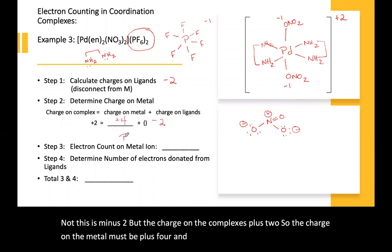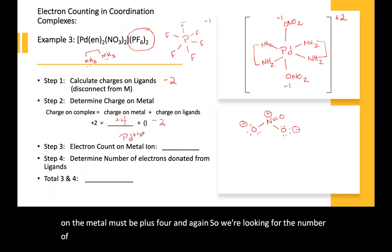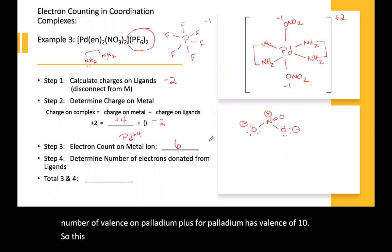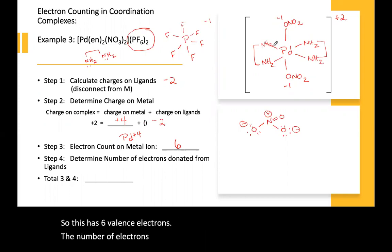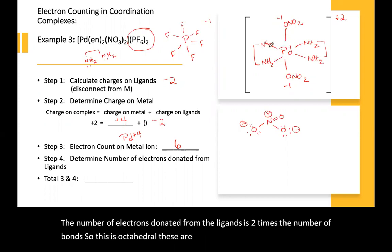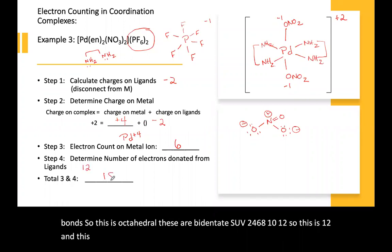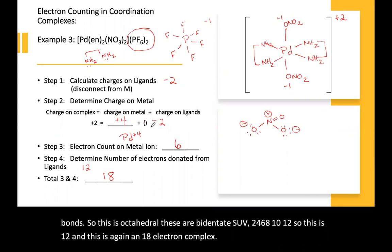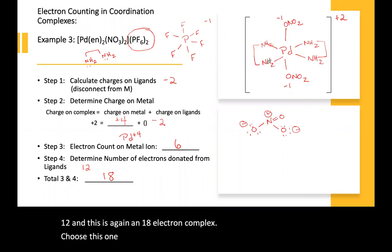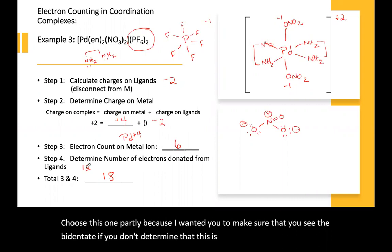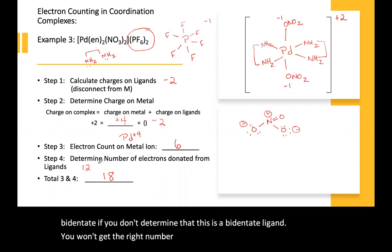We're looking for the number of valence electrons on palladium⁴⁺. Palladium has a valence of 10, so palladium⁴⁺ has six valence electrons. The number of electrons donated from the ligands is two times the number of bonds. This is octahedral with bidentate ligands: 12 electrons donated. Six plus 12 gives an 18-electron complex. I chose this example partly to make sure you see the bidentate ligand — if you don't recognize that ethylenediamine is bidentate, you won't get the right electron count.